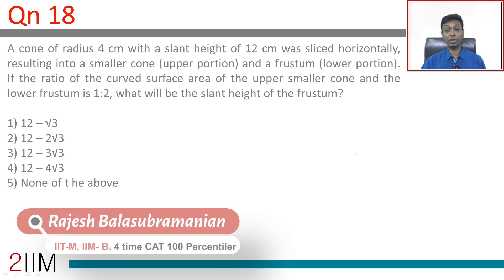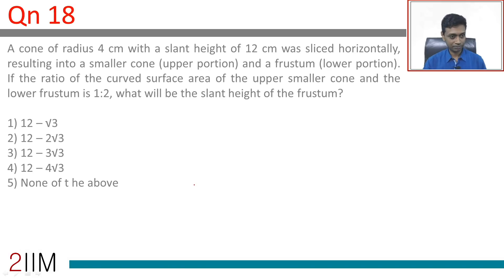A cone of radius 4 centimeters with a slant height of 12 centimeters was sliced horizontally, resulting in a smaller cone and a frustum. The radius is 4 centimeters, slant height is 12 centimeters. This is 4, this is 12. The ratio of the curved surface area of the upper smaller cone to the lower frustum is 1:2.